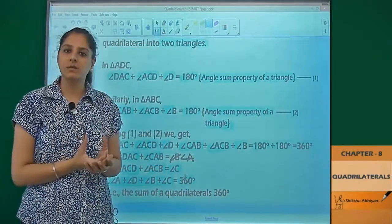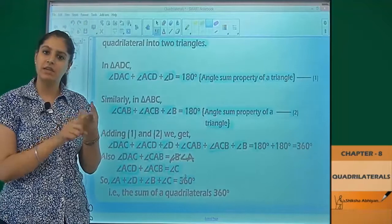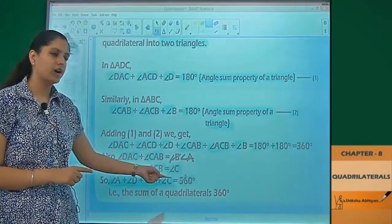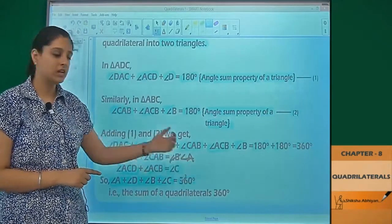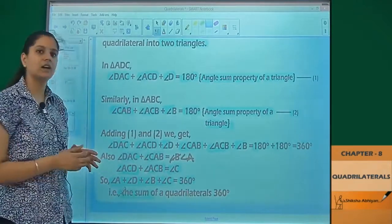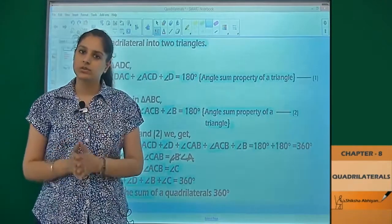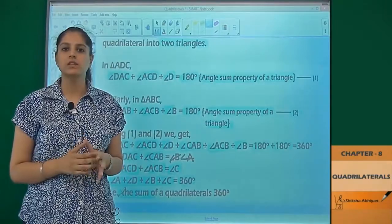That means for the whole quadrilateral ABCD, the four angles are A, B, C, and D. So the sum of all four is equal to 360 degrees. That means the sum of all the angles of a quadrilateral is equal to 360 degrees. Hence, the property is proved.